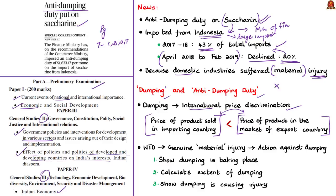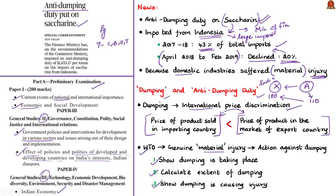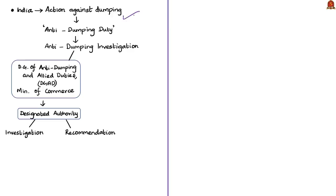The World Trade Organization allows governments to act against dumping where there is genuine material injury to the competing domestic industry. The government must show that dumping is taking place, calculate the extent of dumping — how much lower the export price is compared to the exporter's home market price — and show that the dumping is causing or threatening injury to the domestic market. Many governments impose an anti-dumping duty in response. In India, an anti-dumping investigation is carried out by the Directorate General of Anti-Dumping and Allied Duties (DGAD), functioning under the Department of Commerce in the Ministry of Commerce and Industry.